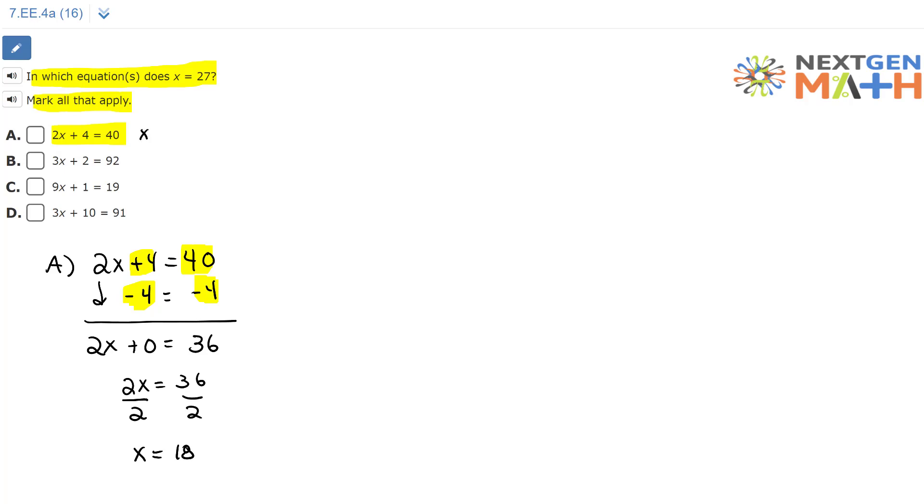So for A, x equals 18, so this is a no. Moving on to B. B reads 3x plus 2 equals 92.